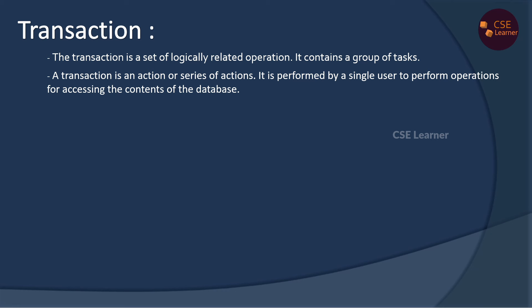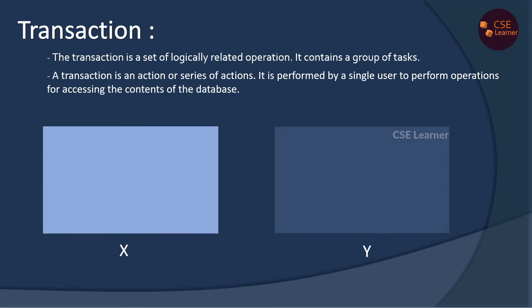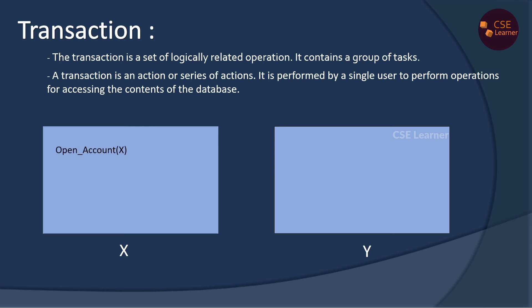For example, X is in the back-end account. Y is in the account of 800 rupees. What is the task? First, X is opened, then we store the balance in the account. Then $800 is deducted from the balance and the balance is updated. That is the account — close the account.